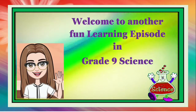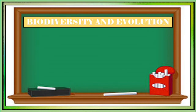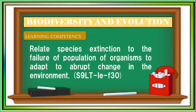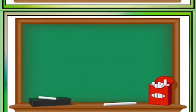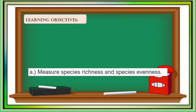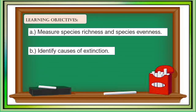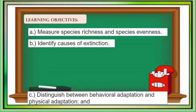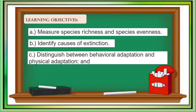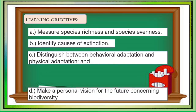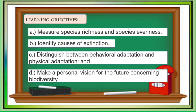Welcome to another fun learning episode in grade 9 science. Today's episode is about biodiversity and evolution. In this module, you will be guided with the following competency: Relate species extinction to the failure of populations of organisms to adapt to abrupt changes in the environment. Specifically, you will learn to measure species richness and species evenness, identify causes of extinction, distinguish between behavioral adaptation and physical adaptation, and make a personal vision for the future concerning biodiversity.